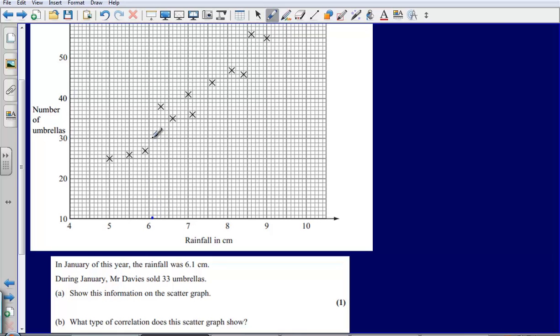So 6.1 find 33—30 is there, so 31, 32, 33. I'm going to plot my point there. Now it's really important that you're as accurate as you can be here. Really be careful when you're reading the scale, make sure that you've read the scale correctly and you've plotted your point in the right position.